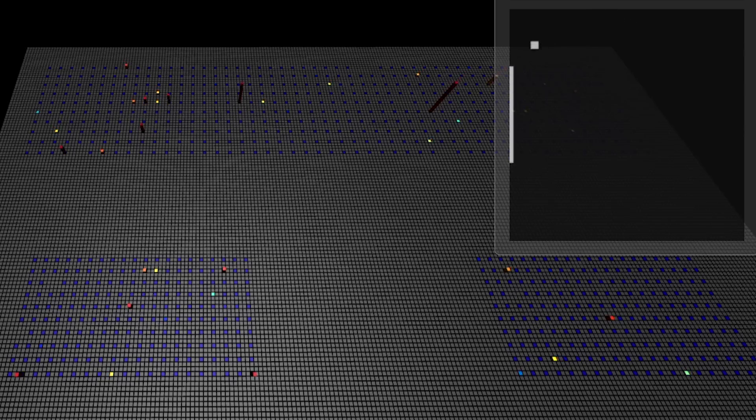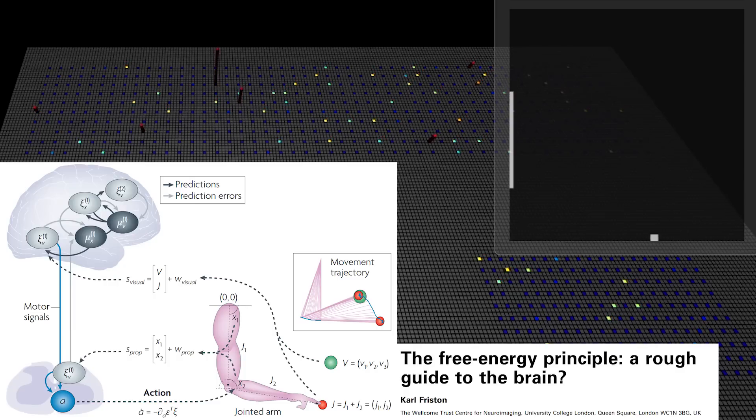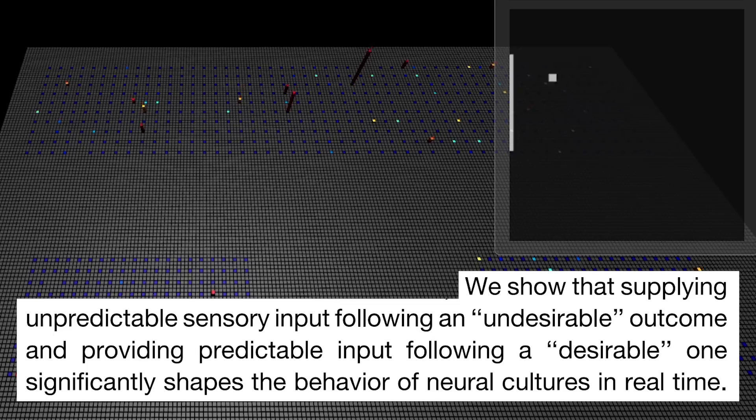But if you let the ball get past the paddle, you get this random stimulation you can't make sense of. If you're trying to learn about the world through active inference, moving around and seeing what happens as a result, you'll want to avoid actions with unpredictable consequences. So random stimulation was used as a punishment to reduce the undesirable behavior of missing the ball.